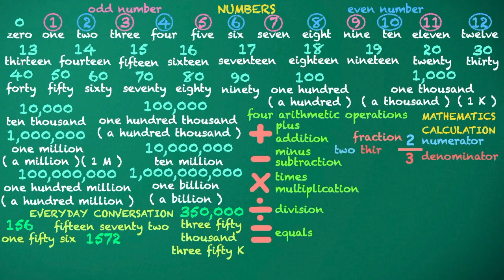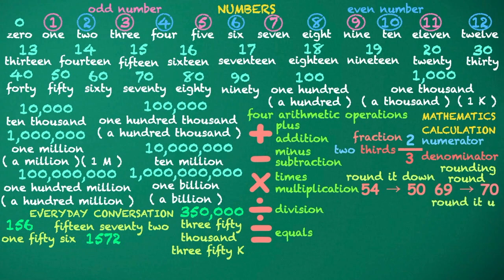Two-thirds. Rounding: round, round it down, round it up.